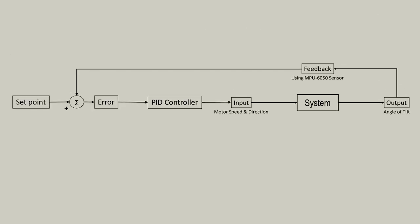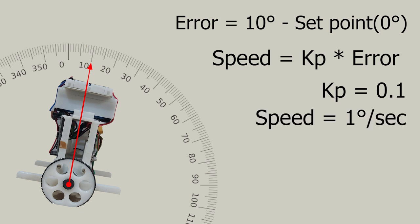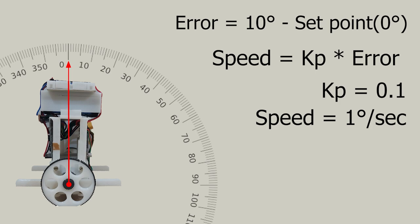The proportional part of the controller will multiply the error by a gain value to determine the motor speed. For example, if the proportional gain is set to 0.1, then the motor speed will be one degree per second at the start, and as we go closer to the set point, the error will reduce, and so will the speed.